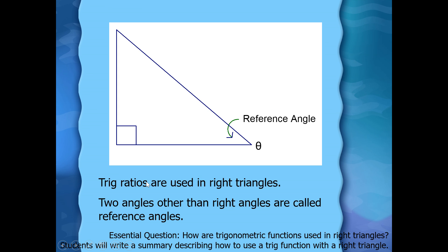So totally there is the first set of blanks there. On your notes, there's a triangle. You want to label the reference angle, put a theta on it — it's like a zero with a line through it. Then you're going to fill in some of the blanks. It says trig ratios are used in right triangles, and two angles other than right angles are called the reference angles. So make sure you label your reference angle and then fill in the blanks.